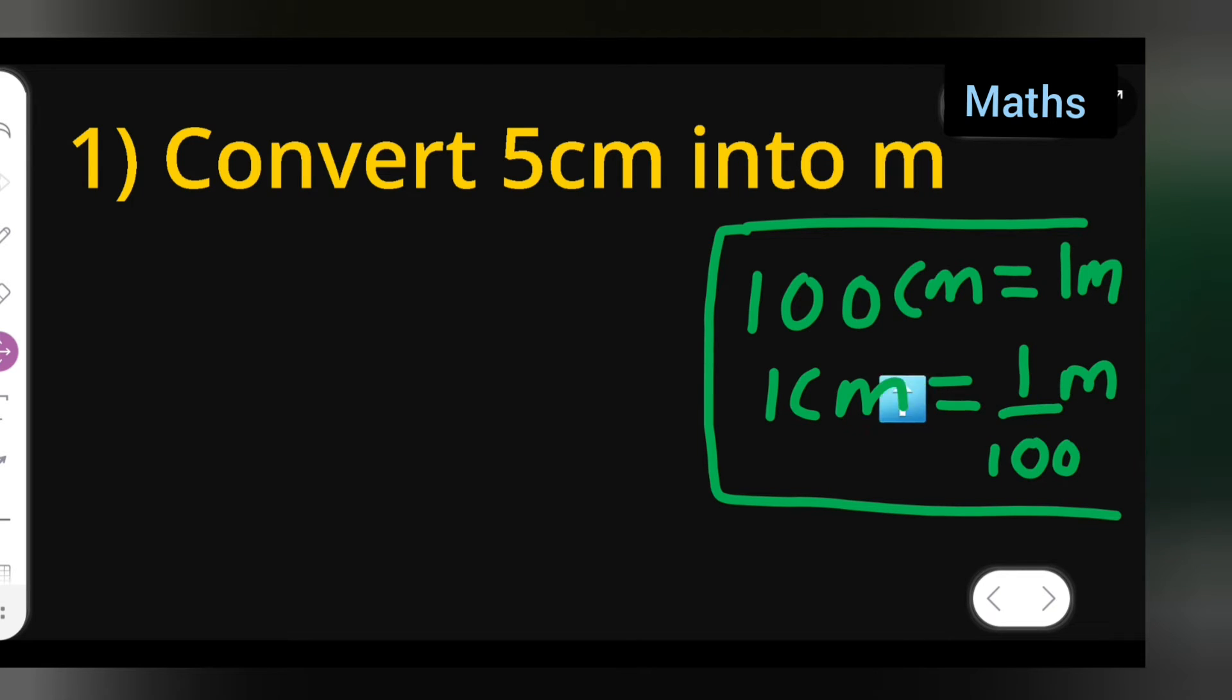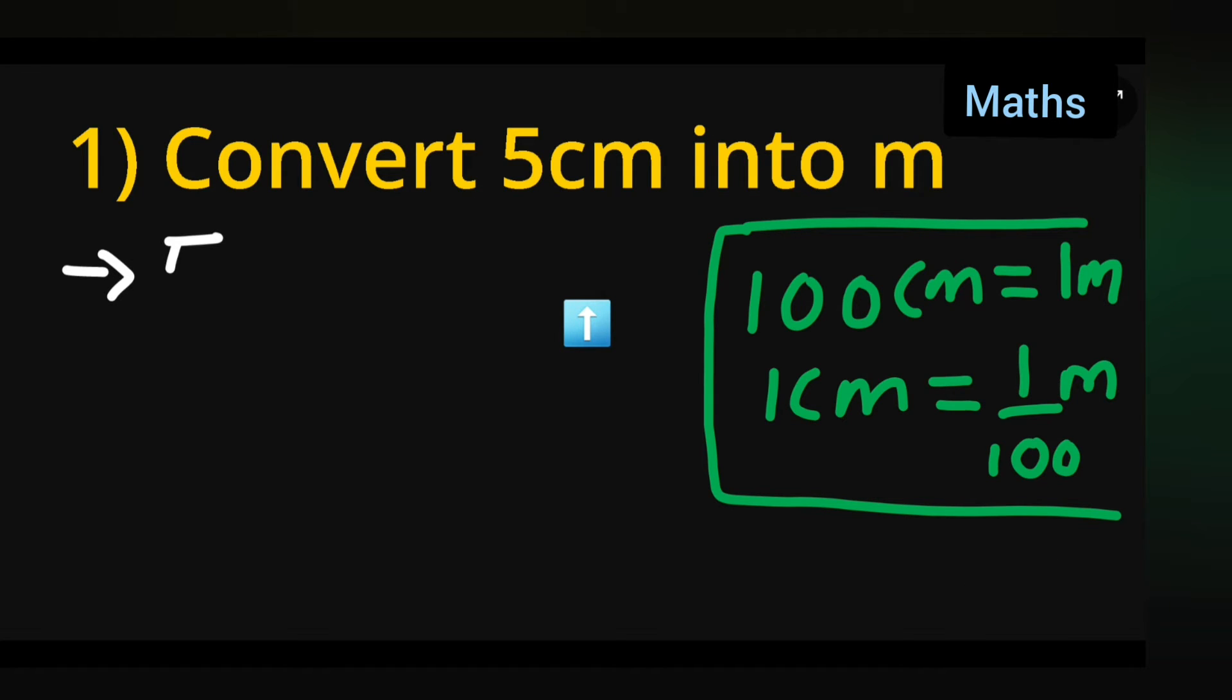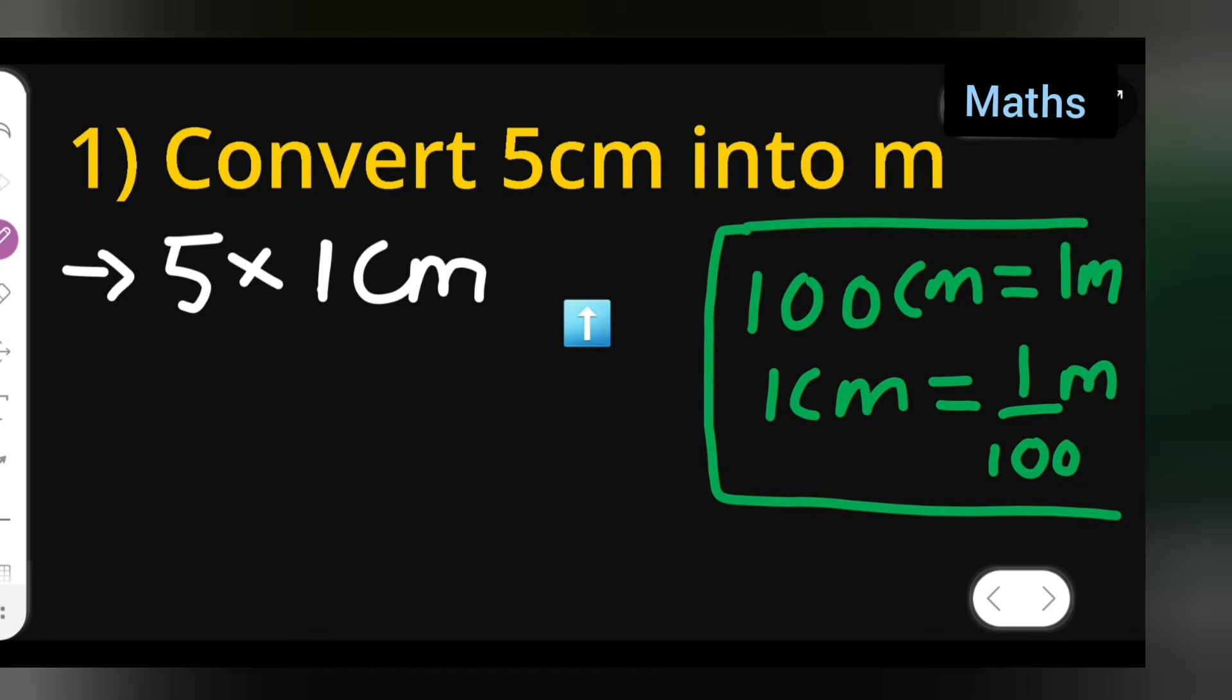Now let's do this part. You can write down 5 multiplied by 1 centimeter. 5 into 1 centimeter is 5 centimeter. Now, this is equal to 5 multiplied by 1 upon 100 meter. I'm giving you this in the easier way so that you understand it better.